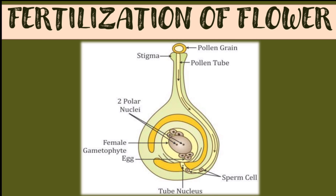In the flower, the pollen grain germinates after pollination of the carpel and grows down through the style, creating a pollen tube that moves down to the ovary. The pollen tube opens into the ovule through the micropyle and bursts into the embryo sac. The male nucleus unites with the egg nucleus inside the ovule, forming a diploid zygote which later develops into a fruit.